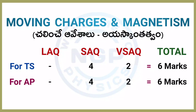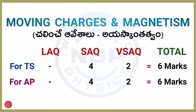Next chapter: Moving Charges and Magnetism. For both AP and TS students, one SAQ and one VSAQ — one 4-marks question and one 2-marks question. Total chapter weightage is 6 marks.